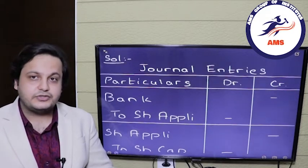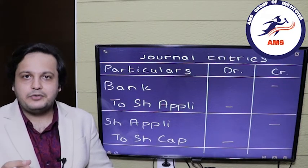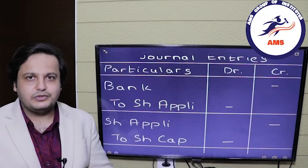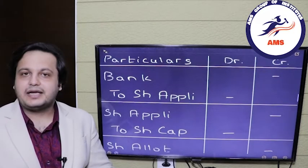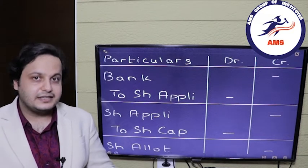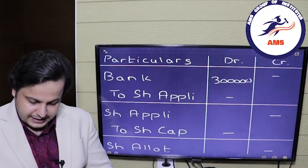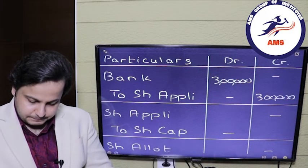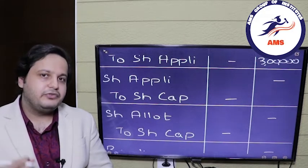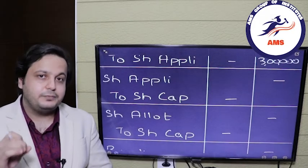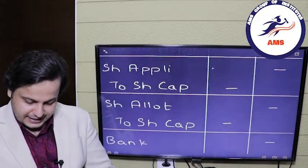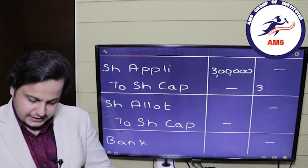We will first receive the applications. The entry will be bank account debit to share application. The amount will be 1 lakh shares multiplied by rupees 3, that is 3 lakh rupees. So bank is debited by 3 lakhs and share application credited by 3 lakh rupees. Since there is no pro-rata allotment, there is no extra money to adjust. We will fully capitalize the application money: share application account debit to share capital for 3 lakh rupees.